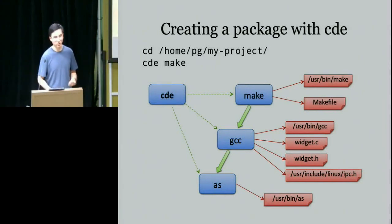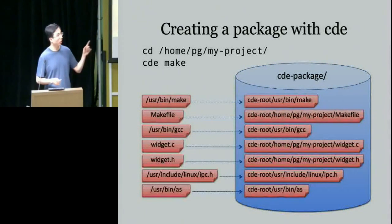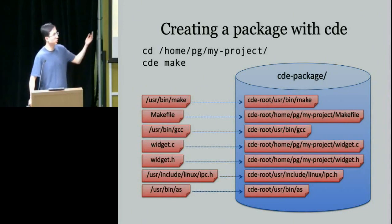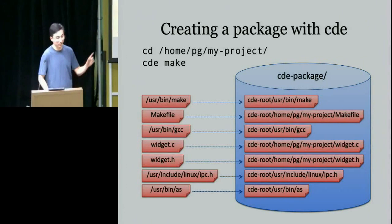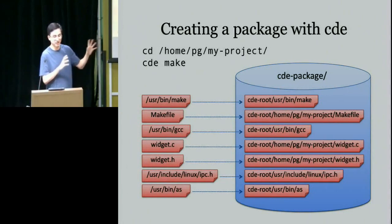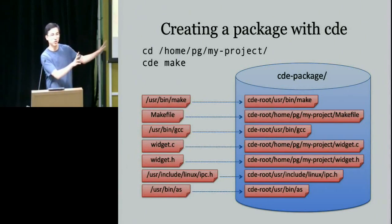While the program is running, CDE copies all the accessed files into the package — a subdirectory called CDE-package in your current directory. Inside it is a pseudo-root directory called CDE-root. All files are straight up copied into CDE-root, preserving their original paths, symlinks, and everything else. You basically want a slice of the file system that your program has accessed, moved into the package.